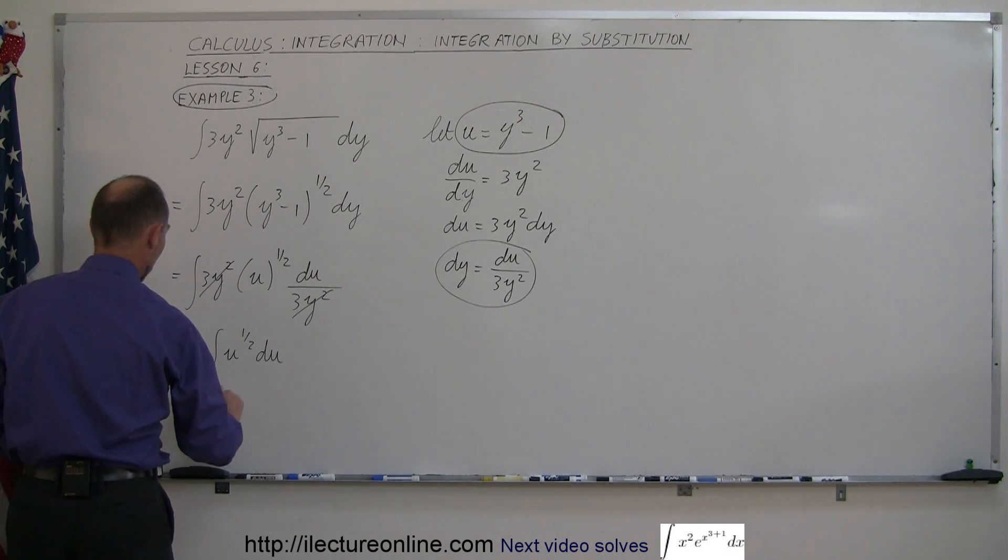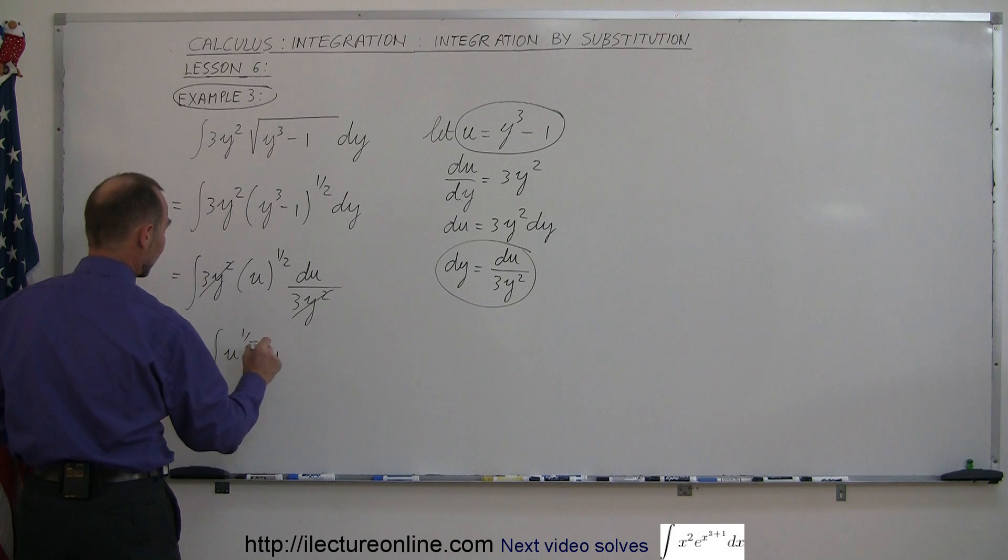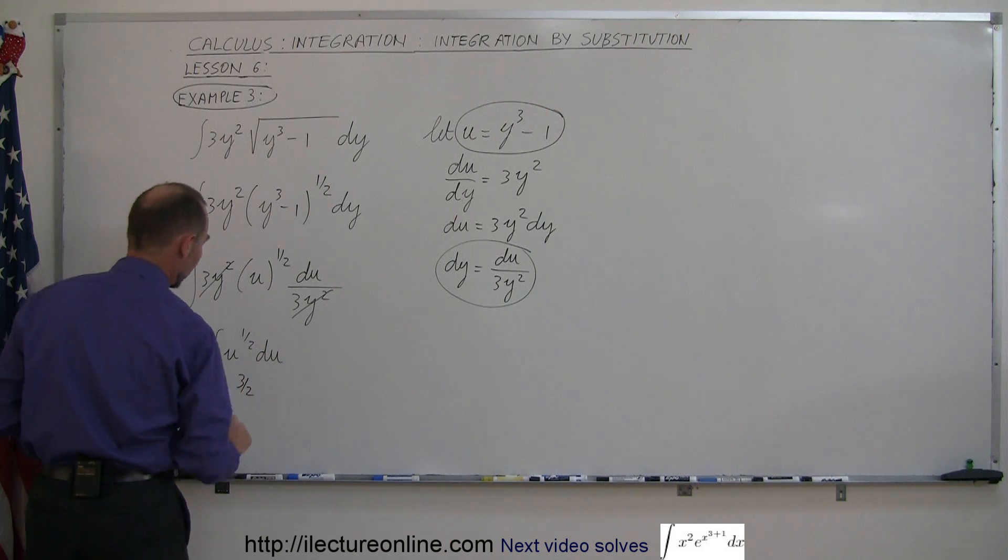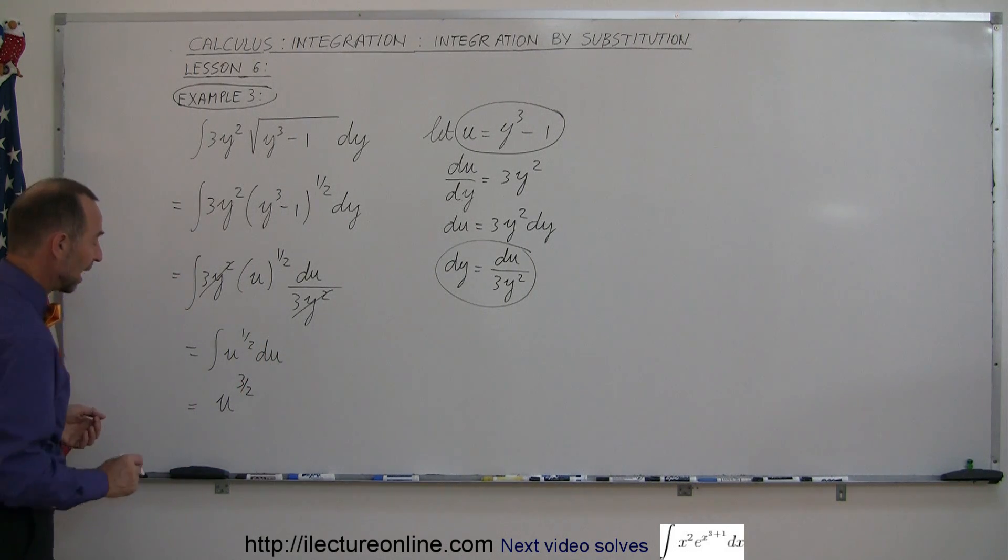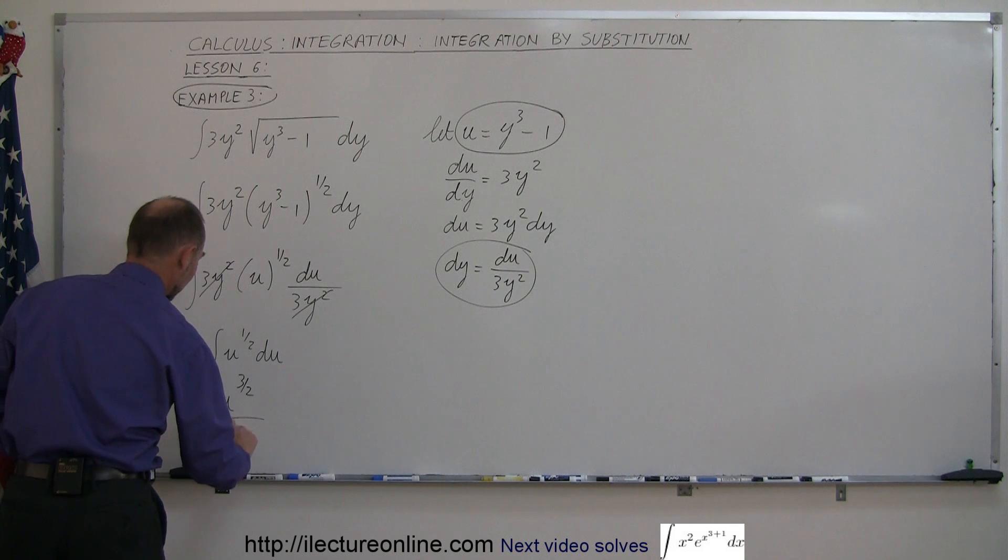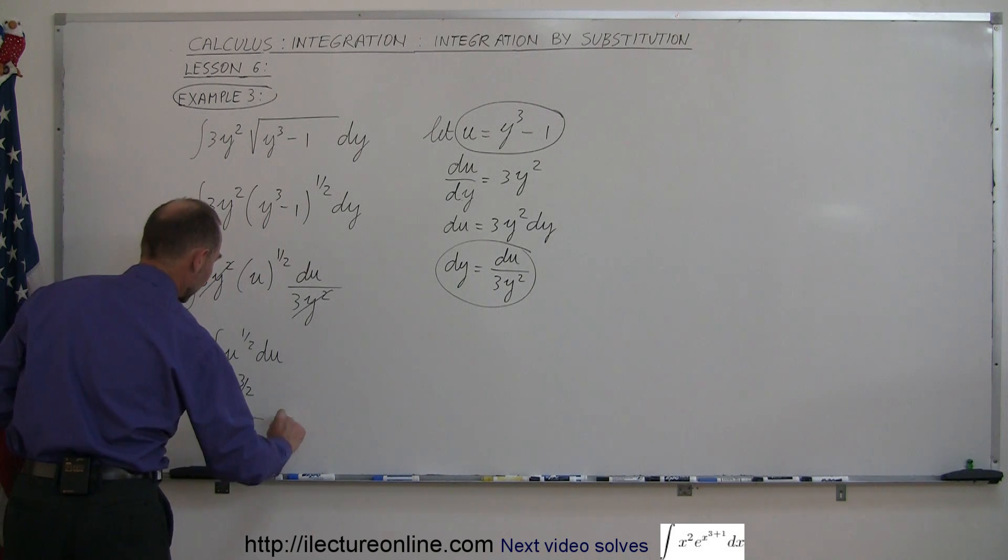So this is equal to u to the 1 half plus 1, which is 3 halves power, right? 1 half plus 1 is 3 halves, divided by the new exponent, 3 halves, plus a constant of integration.